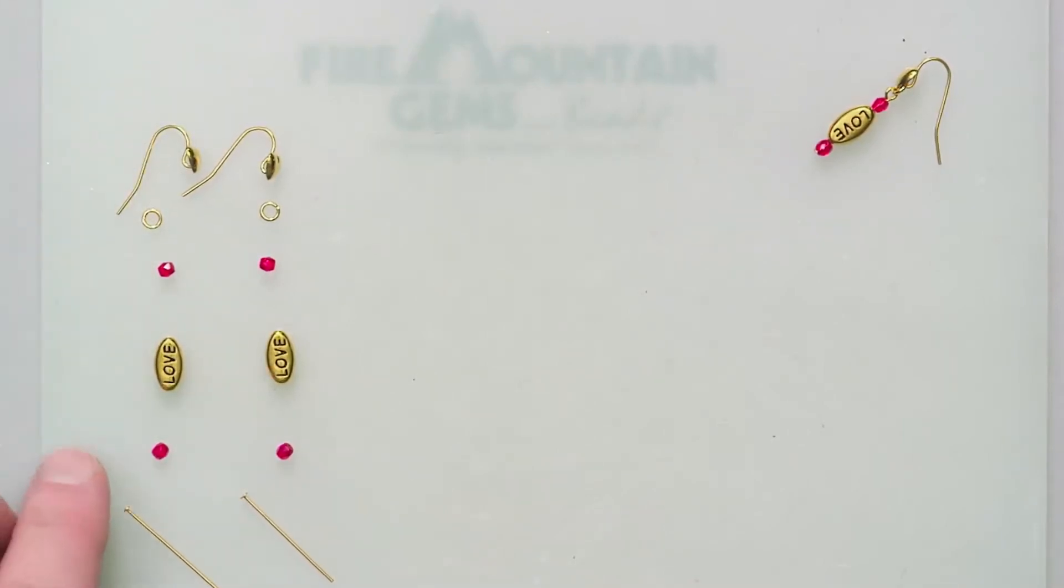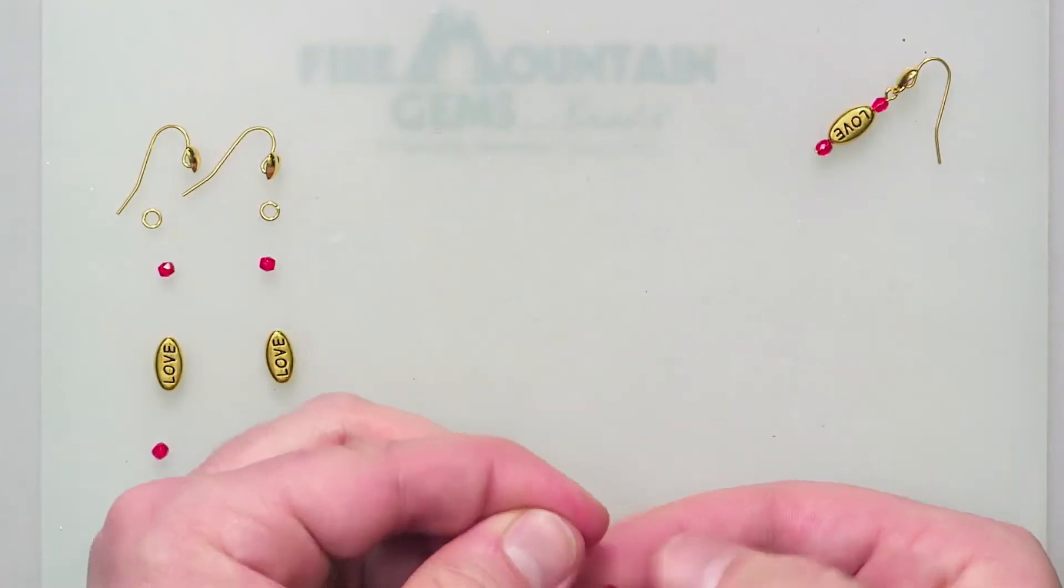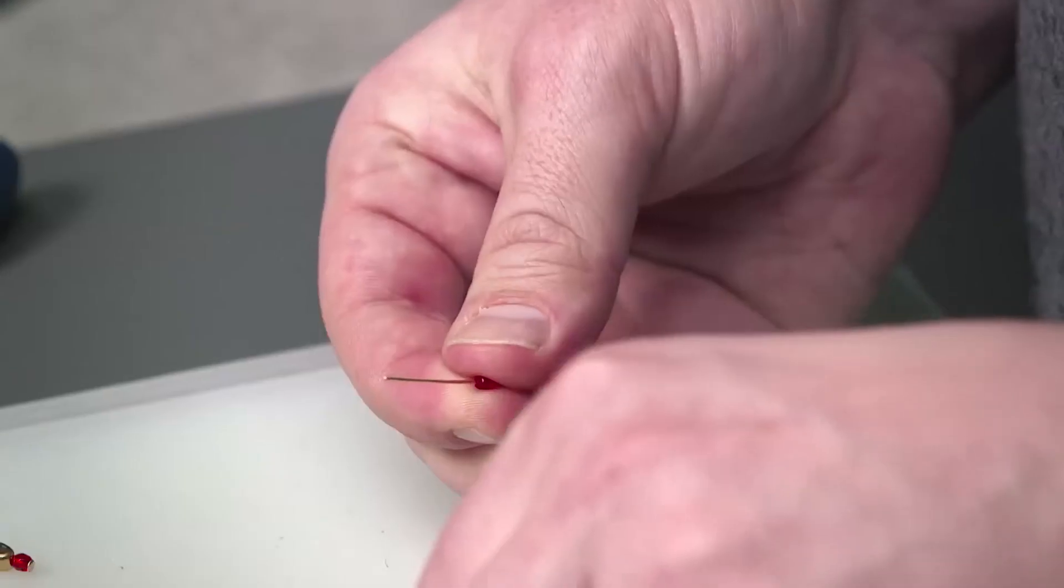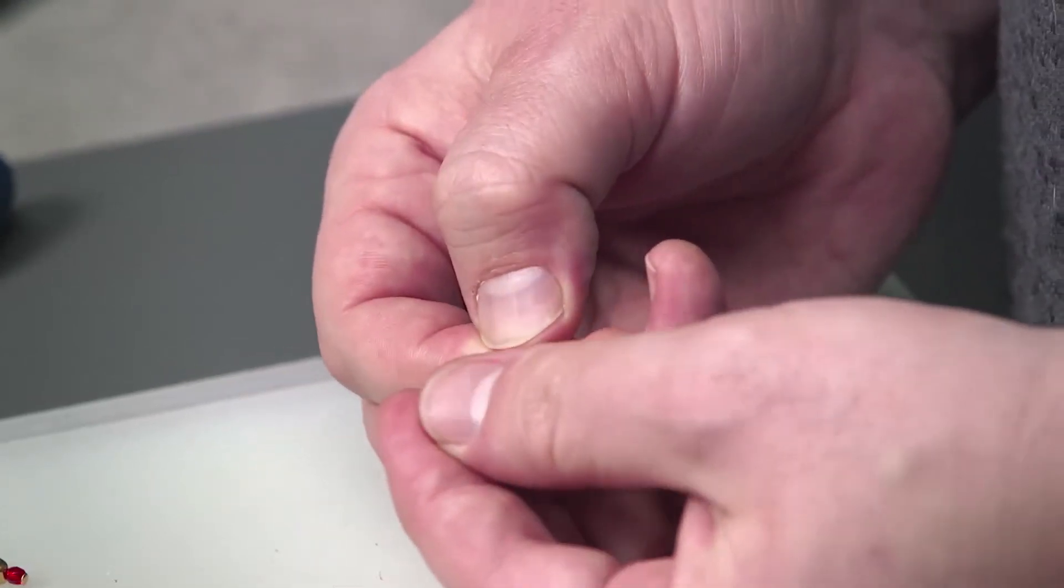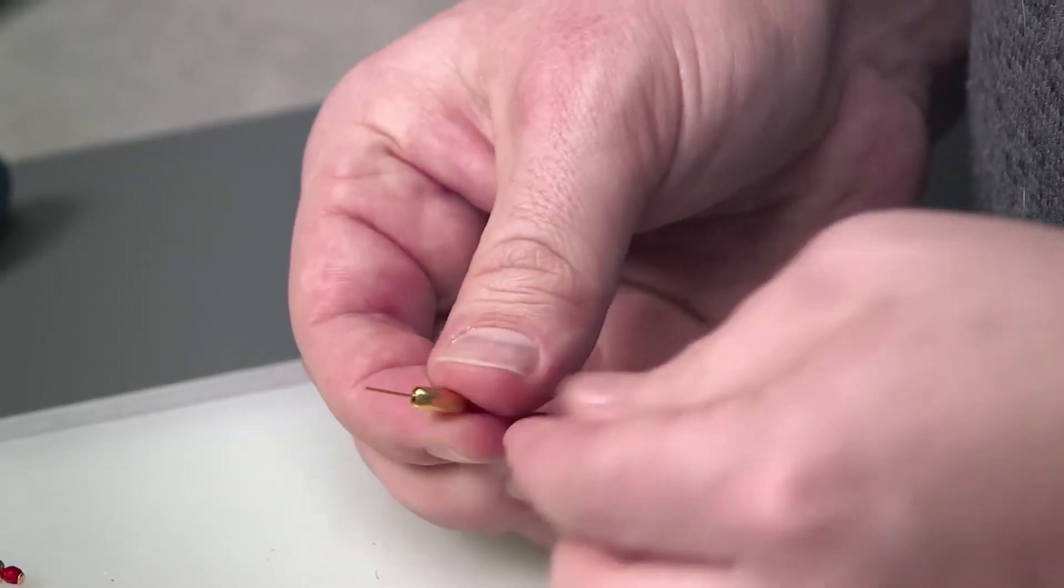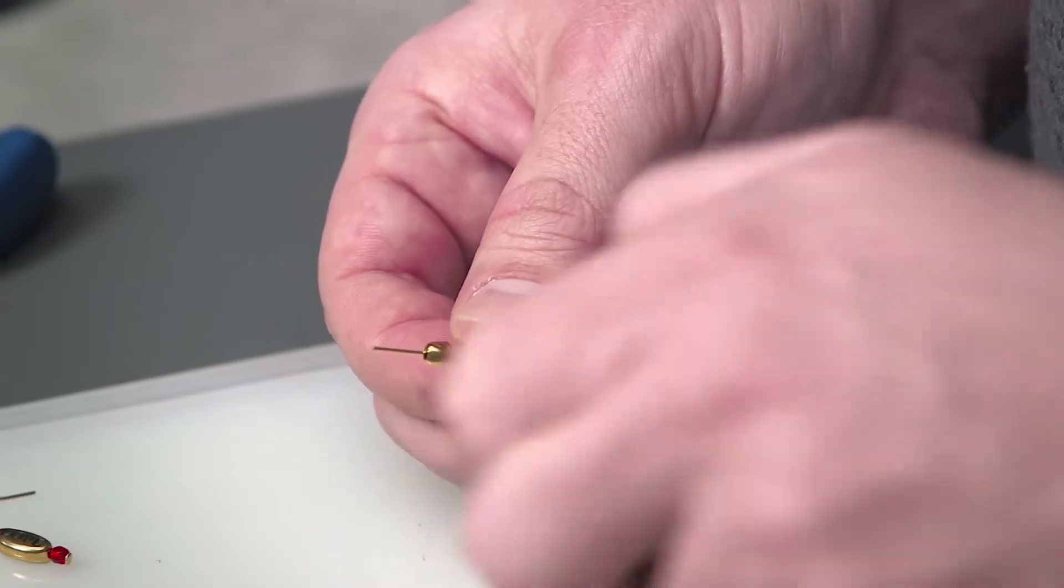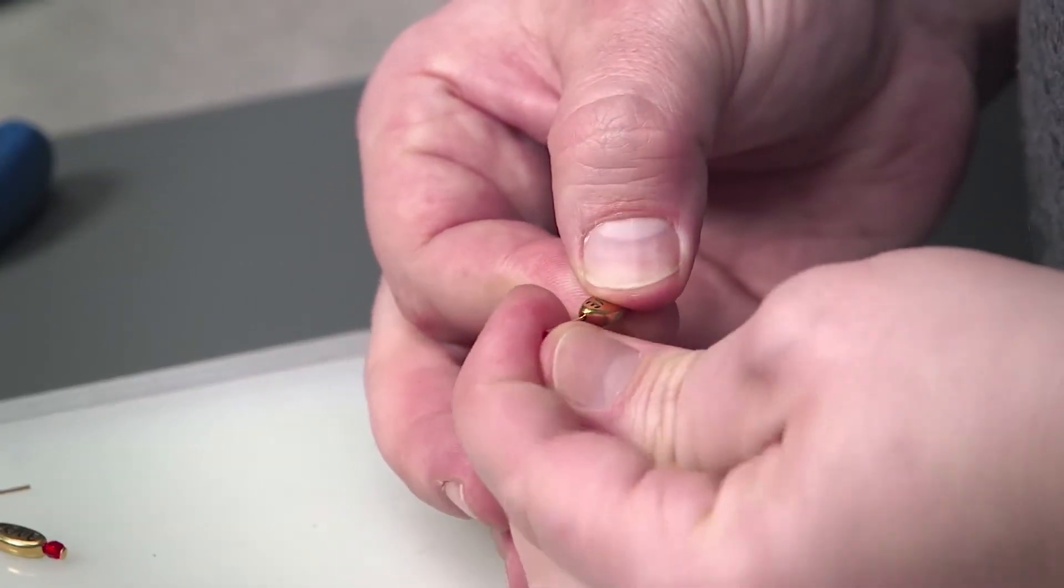So this is really quick and easy, just grab your head pin, take your first fire polished glass bead, stack it on the head pin, take your love bead, stack that, and the other fire polished bead.